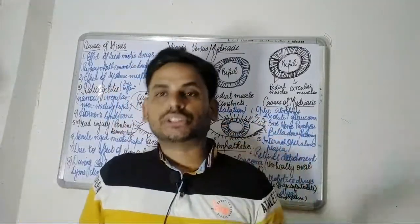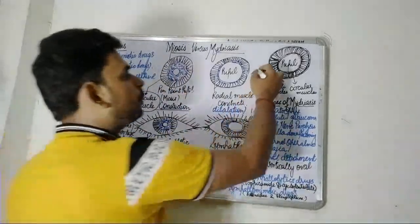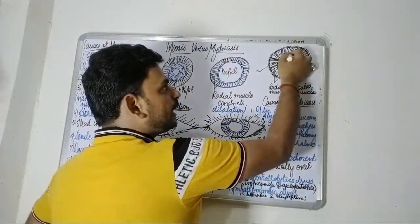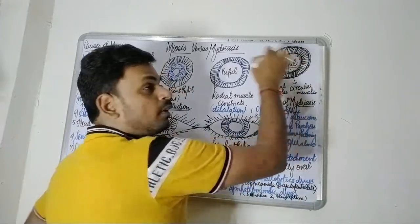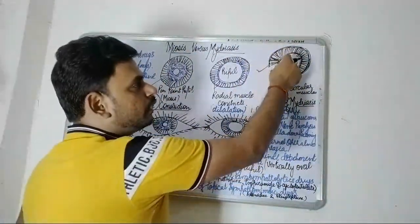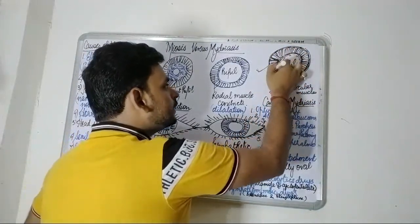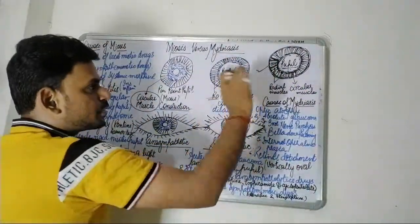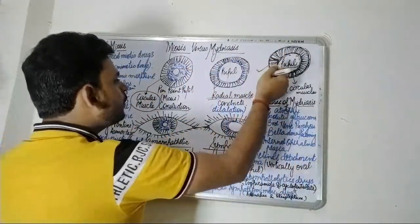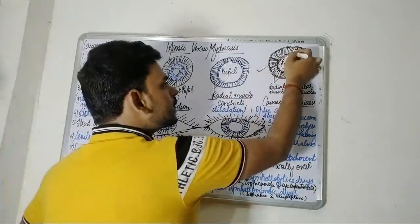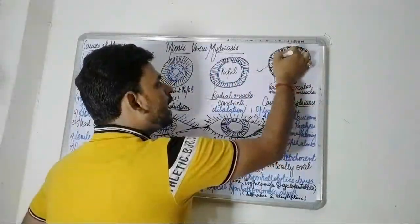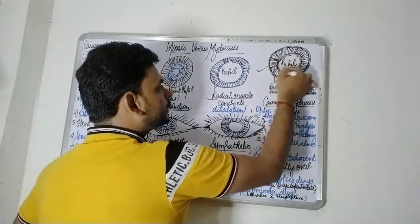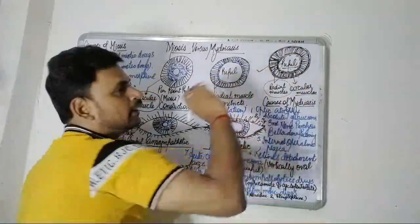In a normal eye, the pupil is the black circular dot in the center permitting light entry. Just outside the pupil there are certain circular muscles, and on the periphery outside those are the radial muscles. So the circular muscles surround the pupil, and beyond them are the radial muscles.